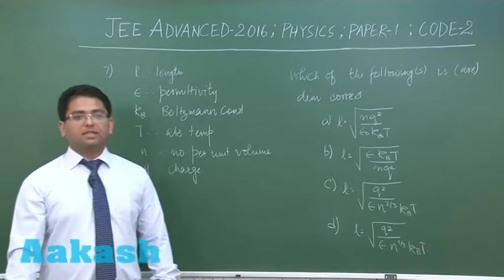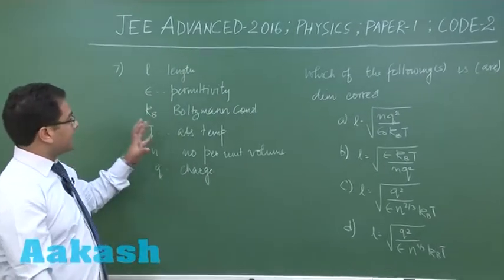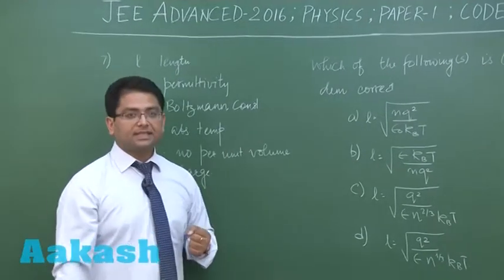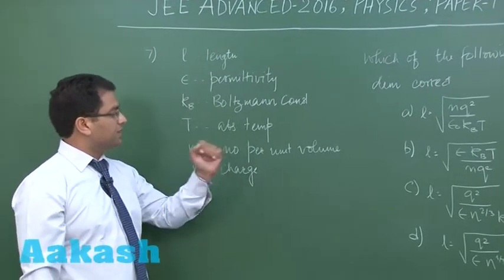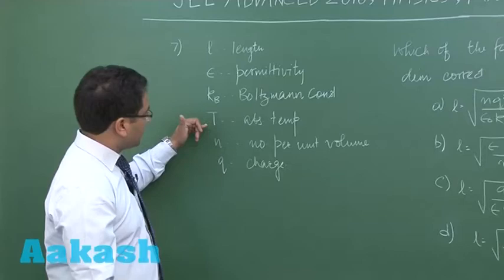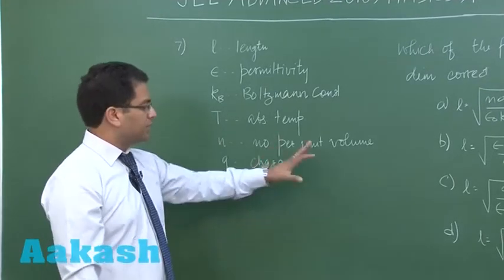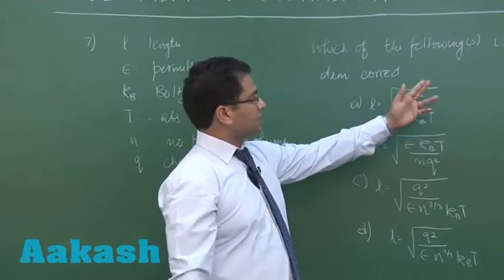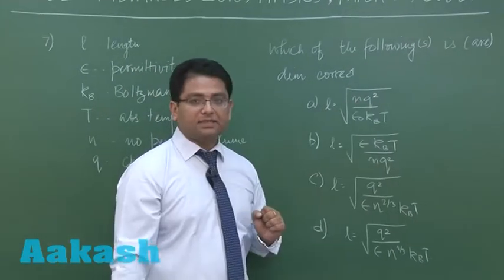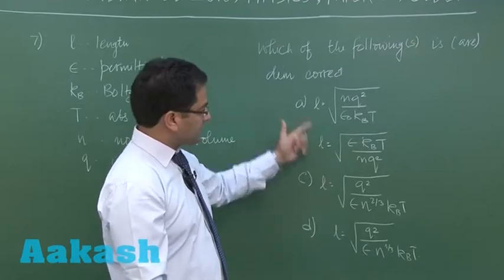All right, now let's proceed to question number seven. Question number seven has been derived from the topic units and dimensions. Here are the variables: length, permittivity, Boltzmann's constant, absolute temperature, this is number per unit volume, and q is the charge. Based on this, which of the following is dimensionally correct? We need to see the dimension of length.